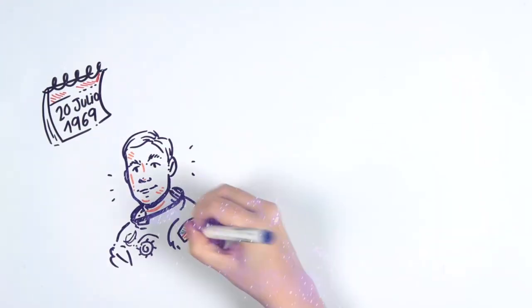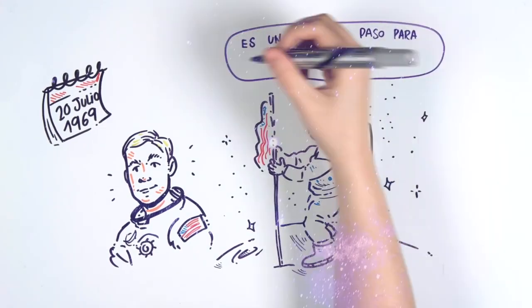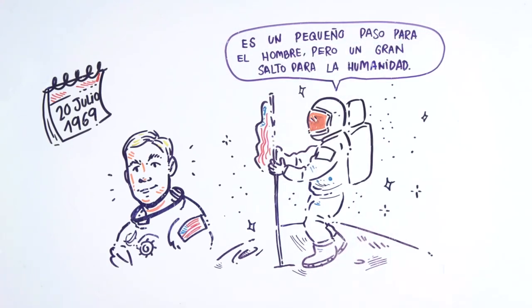Eight years later, on July 20, 1969, American astronaut Neil Armstrong was the first human being to set foot on the moon. He was the one who said the phrase, 'That's one small step for a man, one giant leap for mankind.'